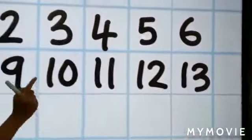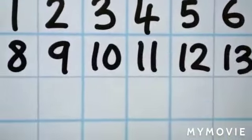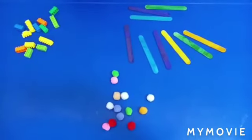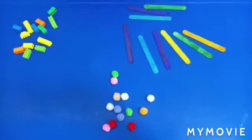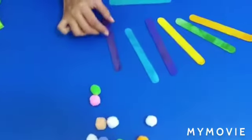So our new number is number thirteen. Very good job. We have some objects over here. Now we are going to count and see which one of them makes number thirteen. Okay, let's count the ice cream sticks first.